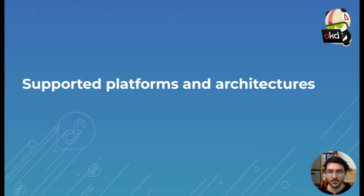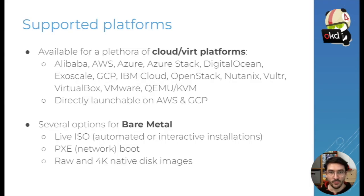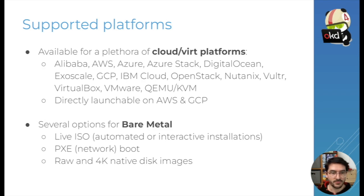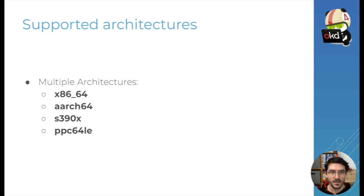Fedora CoreOS comes for several supported platforms and architectures. For platforms, we are available on a lot of cloud and virtualization platforms. It is directly launchable in AWS and GCP. If you want to install Fedora CoreOS in a virtual infrastructure, you have several options: the live ISO, which offers both automated and interactive installation options; PXE boot over the network; or raw disk images written directly to disk. We support both the classic disk format and the 4K native disk format. Fedora CoreOS is now available for all four architectures in Fedora: x86, AArch64, s390x, and PowerPC 64-bit.